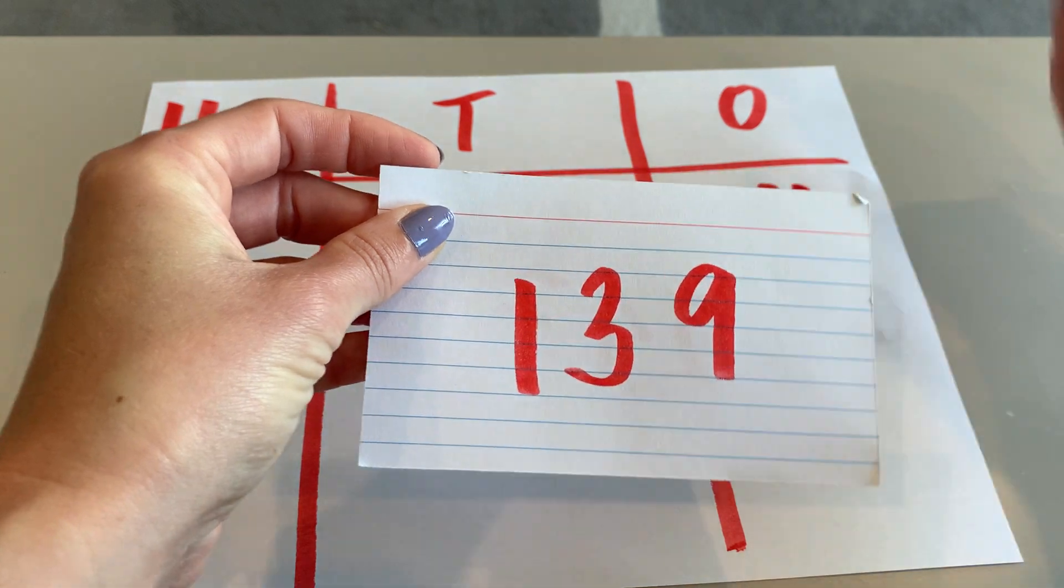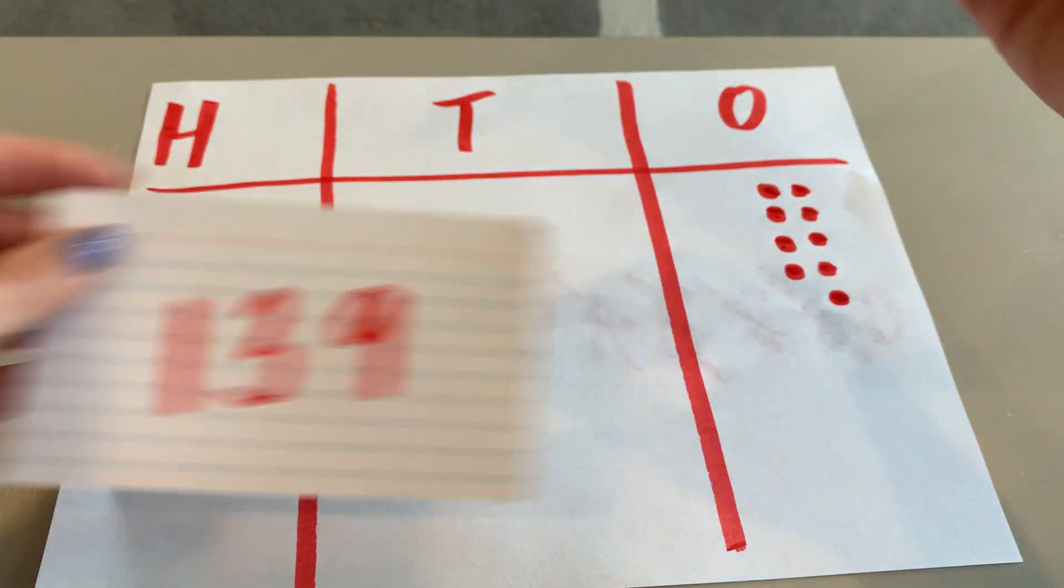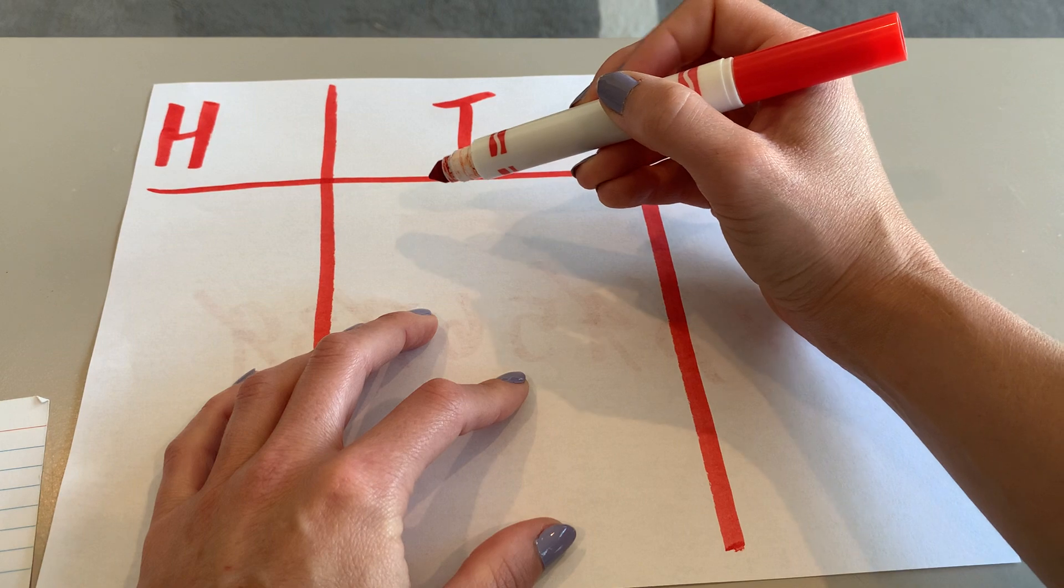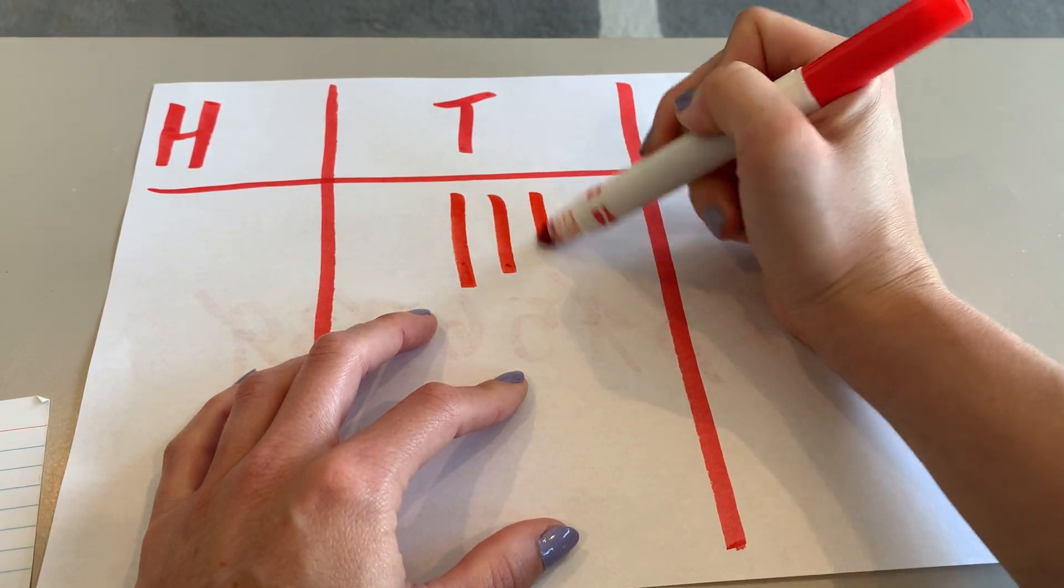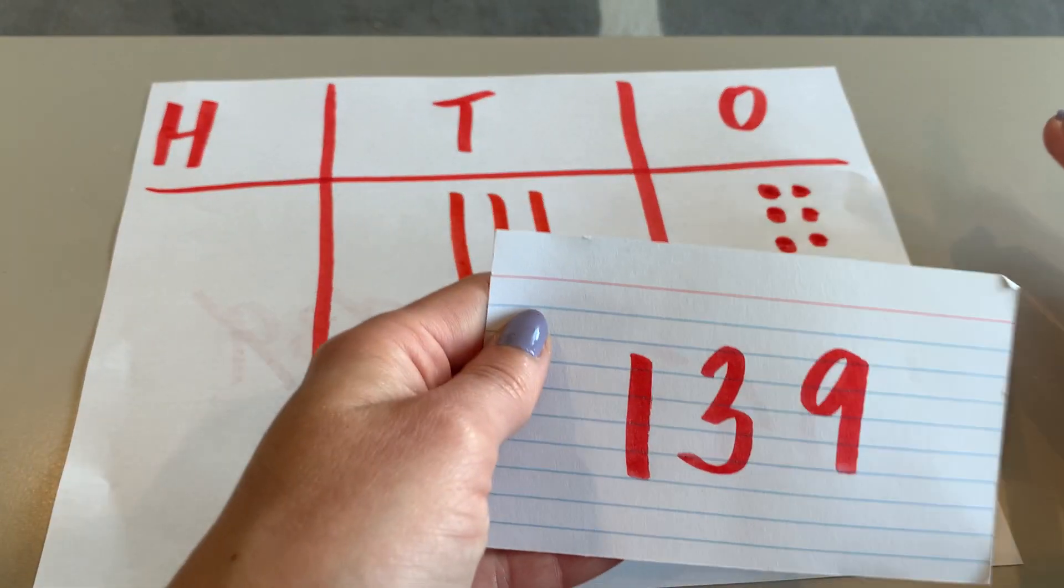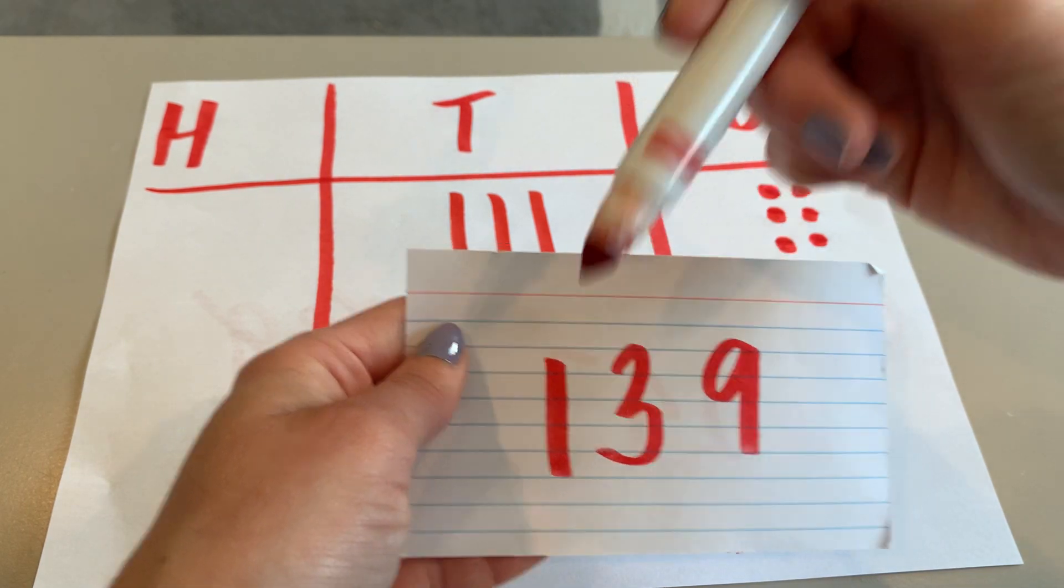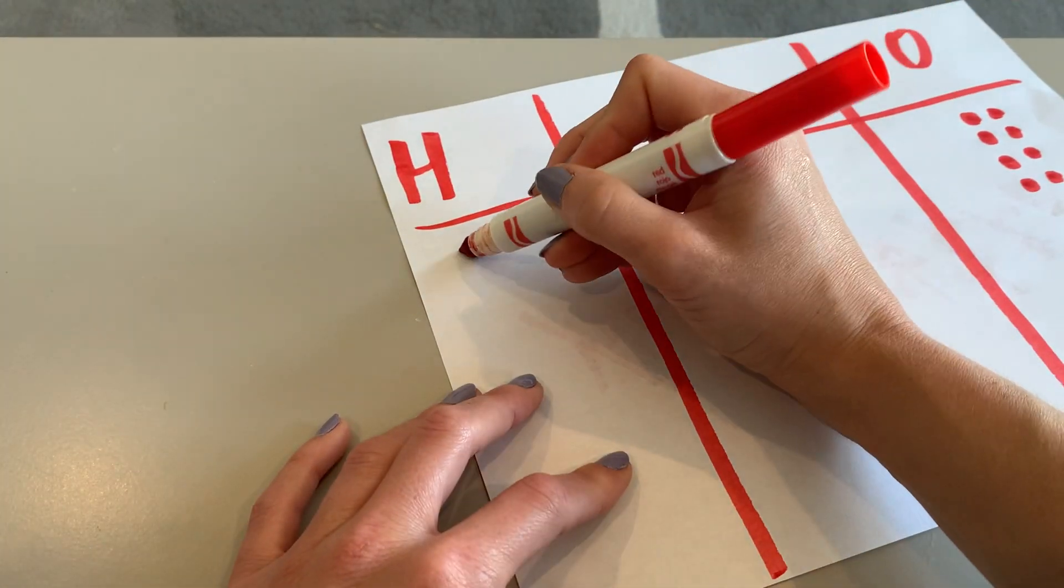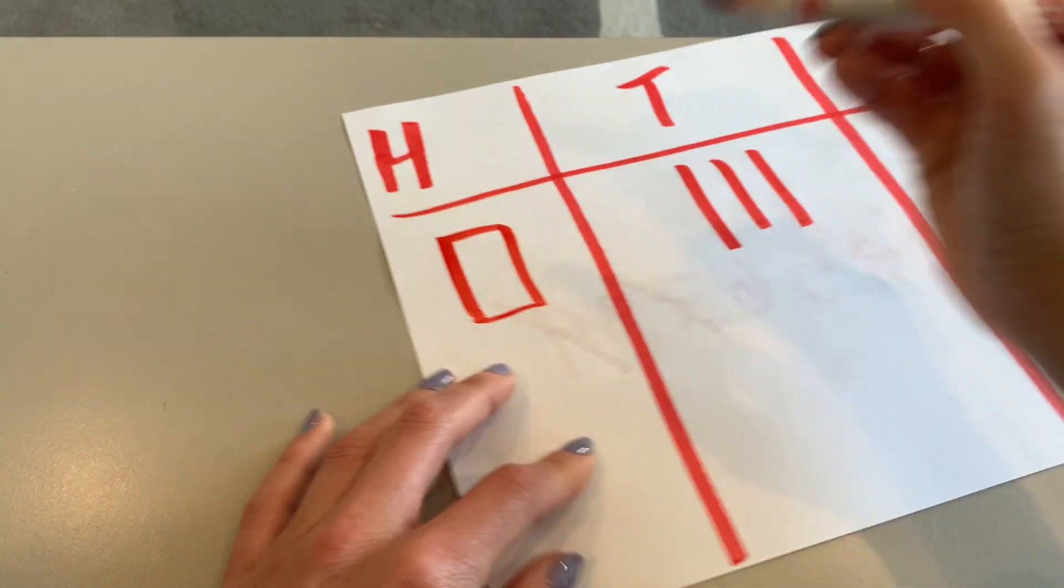The three is the digit in the tens, so I'm going to draw three tens rods. One, two, three. The one is the digit in the hundreds, so I'm going to draw one hundreds flat.